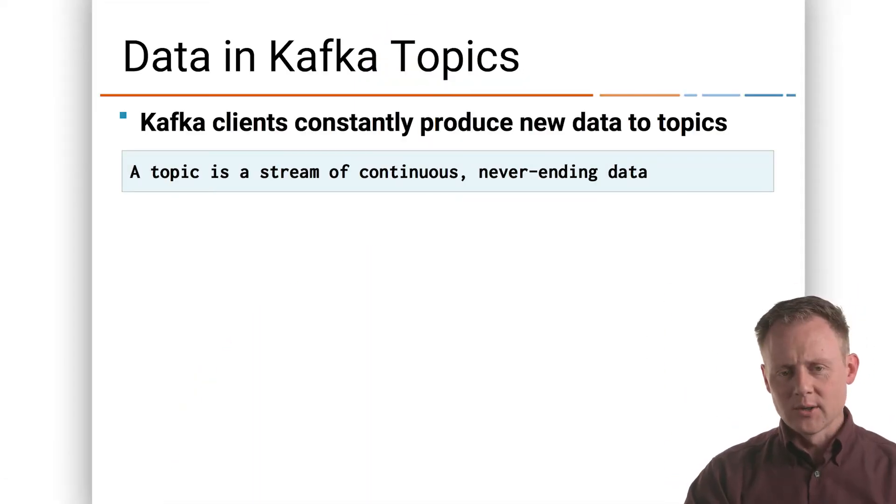Remember that all the data we're working with in KSQL starts in Kafka topics. There are clients somewhere, we presume, that are constantly producing new data into those topics. This is external to our KSQL queries and stream processing. Somebody's putting data into topics. A topic is just a stream of continuous, never-ending data. There's always going to be more records in that stream of data.